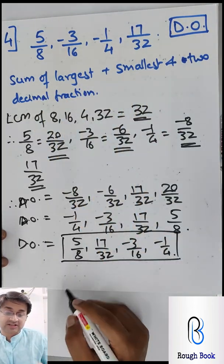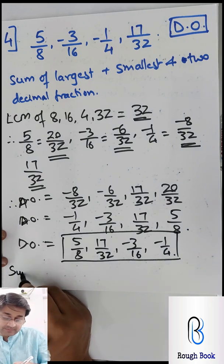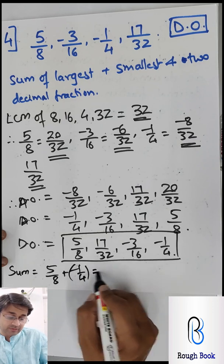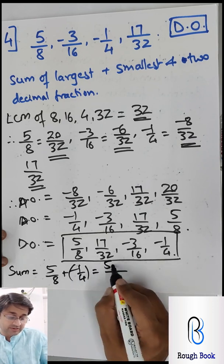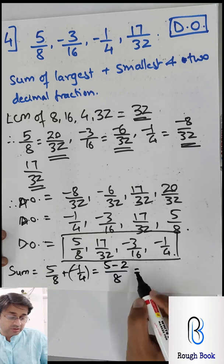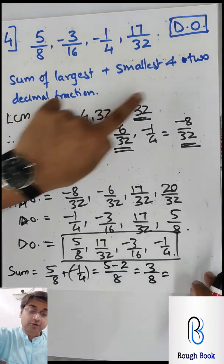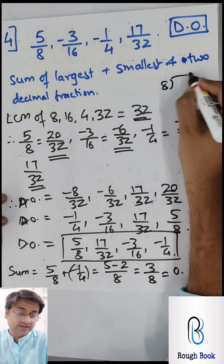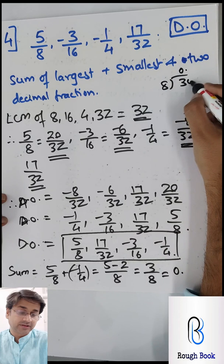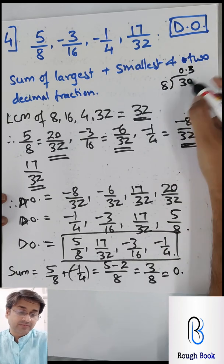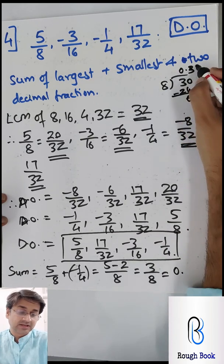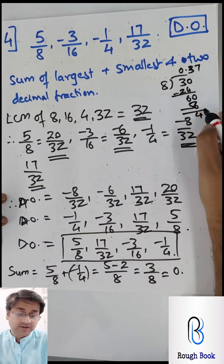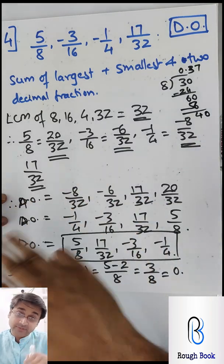Now finally what do they want? Sum of largest and smallest fraction. So sum of largest, that is 5 by 8, plus minus 1 by 4. So my LCM is going to be 8. 5, 4 ones are, 2's are 2, so it should be 3 by 8. Write this up to 2 decimal places. So when I divide this, 0 point - so let's divide actually 8 by 3. So 0 point 30, so 3 times 24, so I will get 60, 7 times 56, so I will get 4. Go one more decimal place because 2 decimal you want - that means go to 3.